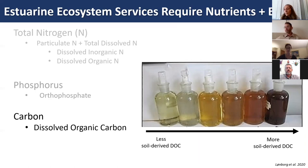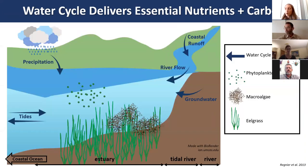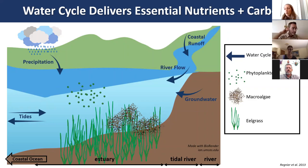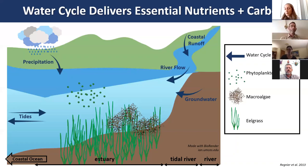All these nutrients and energy sources are delivered to estuaries via the water cycle. Globally, estuaries receive about 27% of surface freshwater discharge in the form of coastal runoff and river discharge, about 25% of total organic carbon land-to-ocean fluxes, and 34% of nitrogen land-to-ocean fluxes. Other freshwater sources include direct groundwater seepage, precipitation, and tidal flux from the ocean.